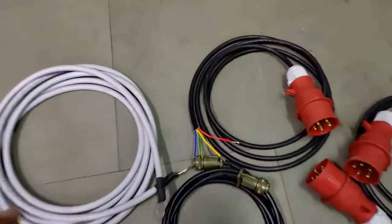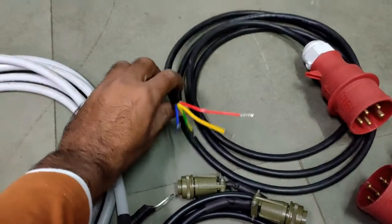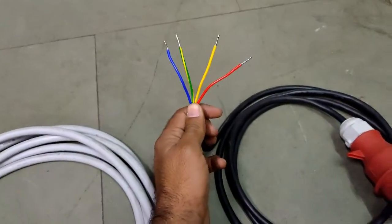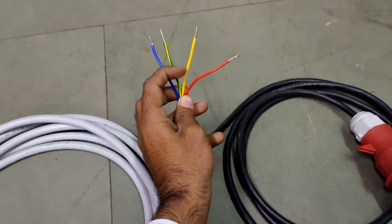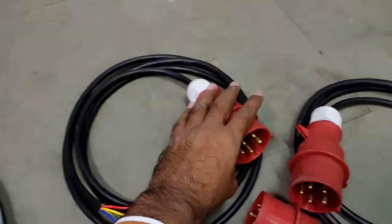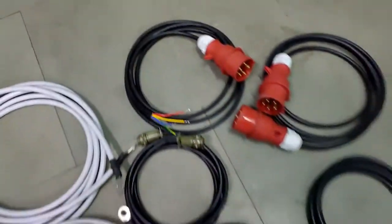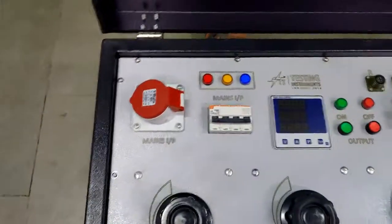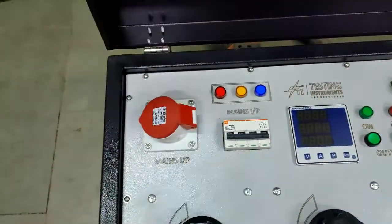Input mains probe is 4-core wire and as per their color we need to feed input supply as R, Y, B, and N. At open end of probe, the plug should be inserted in socket mounted on instrument's control panel.